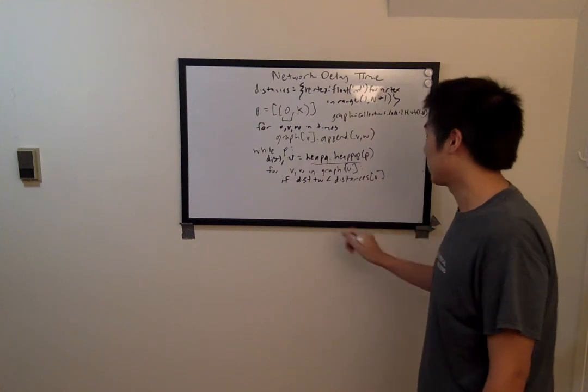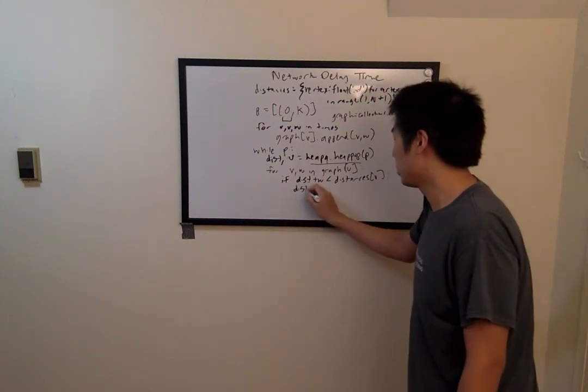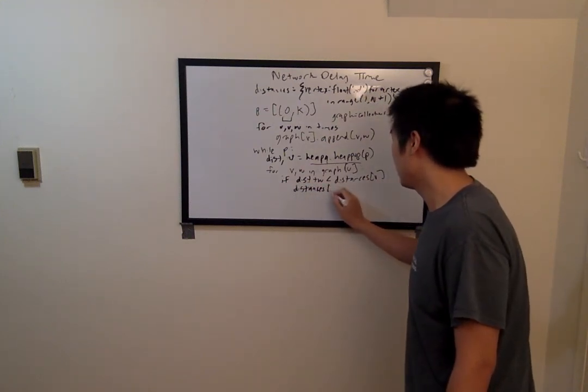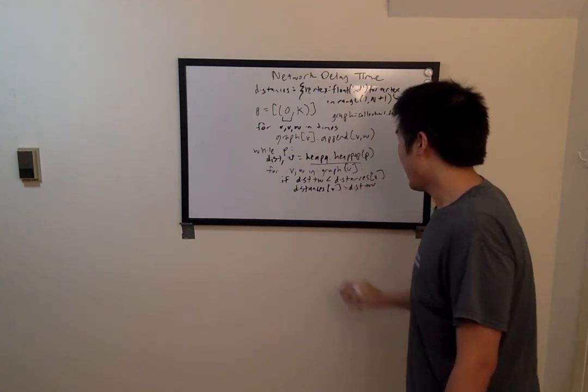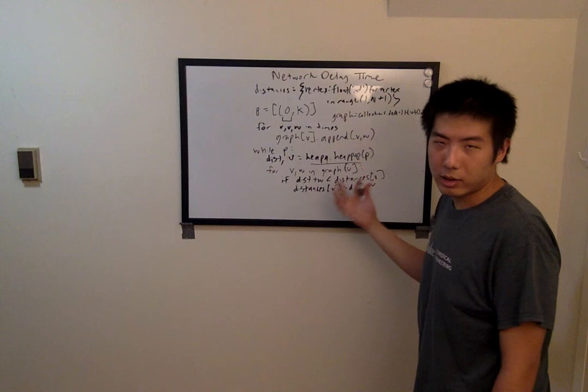We want to update that distance with the new shortest path that we found. And in addition, we also want to enqueue that vertex.